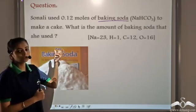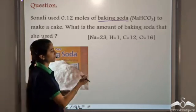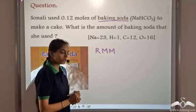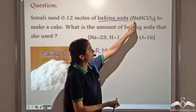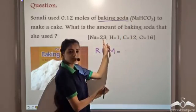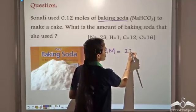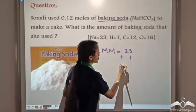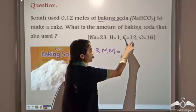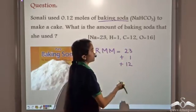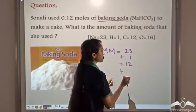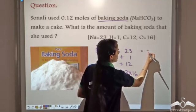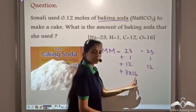Let's find the amount of baking soda Sonali used by starting with the relative molecular mass of NaHCO₃. There is 1 atom of sodium with relative atomic mass 23, 1 atom of hydrogen with relative atomic mass 1, 1 atom of carbon with relative atomic mass 12, and 3 atoms of oxygen each with relative atomic mass 16, giving 3 x 16 = 48.